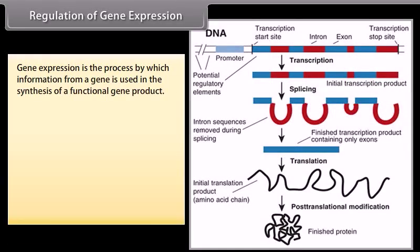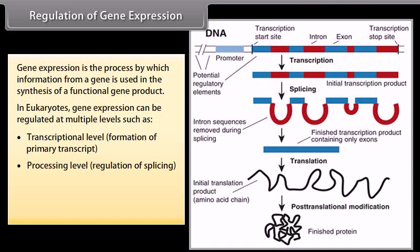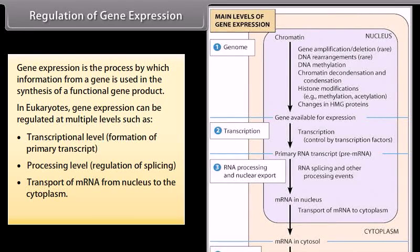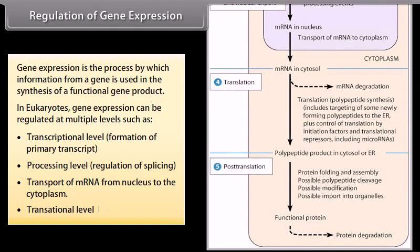Regulation of gene expression. Gene expression is the process by which information from a gene is used in the synthesis of a functional gene product. In eukaryotes, gene expression can be regulated at multiple levels such as transcriptional level, formation of primary transcript, processing level, regulating of splicing, transport of mRNA from nucleus to the cytoplasm, translational level, and positive and negative regulation.